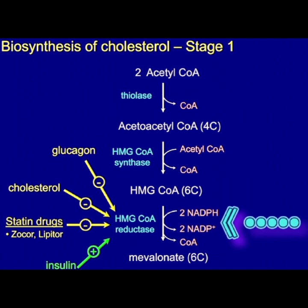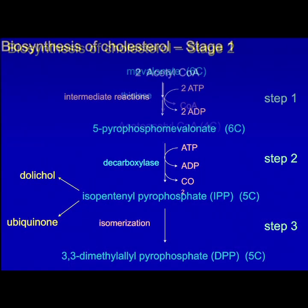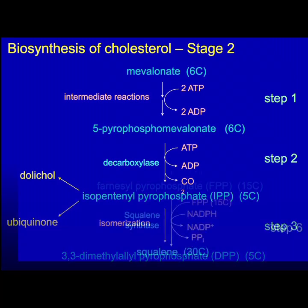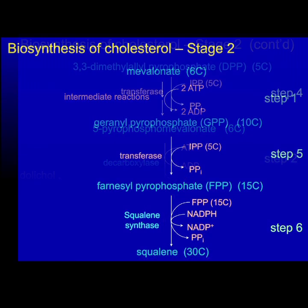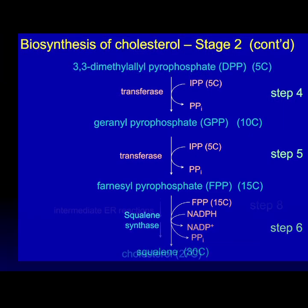Isopentanyl pyrophosphate, formed from mevalonic acid, will be sequentially added until squalene is formed, and then squalene is cyclized to form lanosterol and then cholesterol.